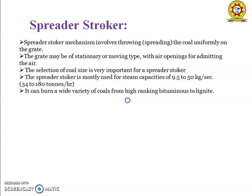The grate may be of stationary or moving type with an air opening for admitting the air. The selection of coal size is very important for a spreader stoker. The coal size is between 6 cm to 36 cm. The spreader stoker is mostly used for steam capacity of 9.5 to 50 kg per second, that is 34 to 180 tons per hour. It can burn a wide variety of coals from high ranking, that is from bituminous to lignite.